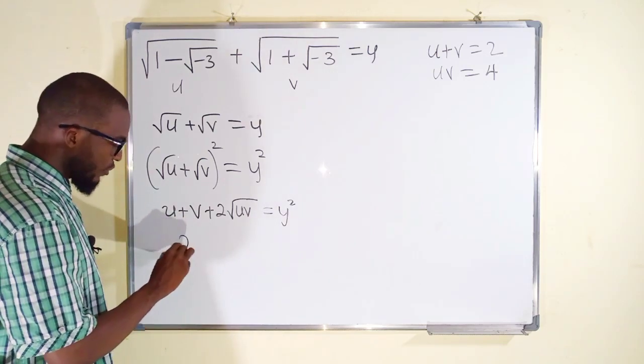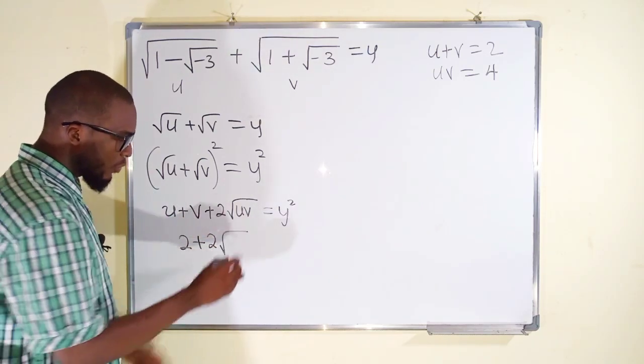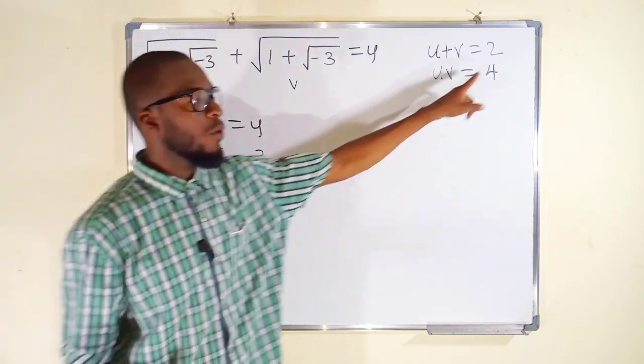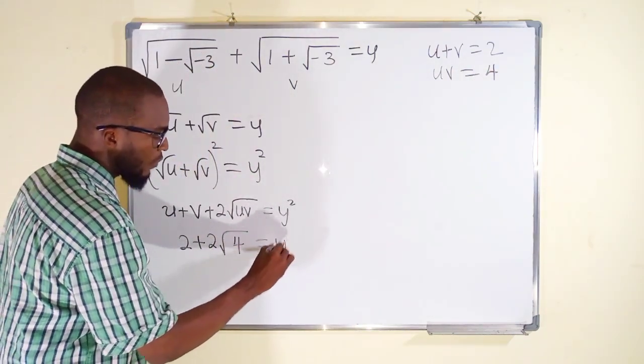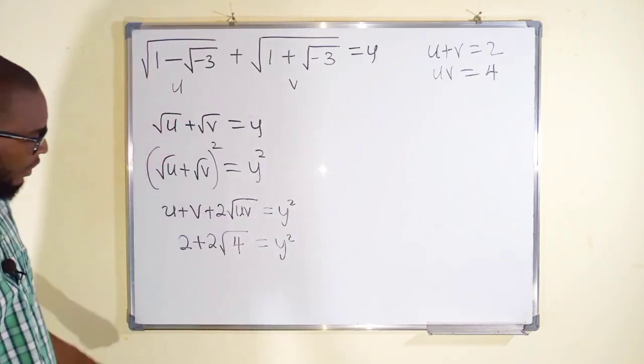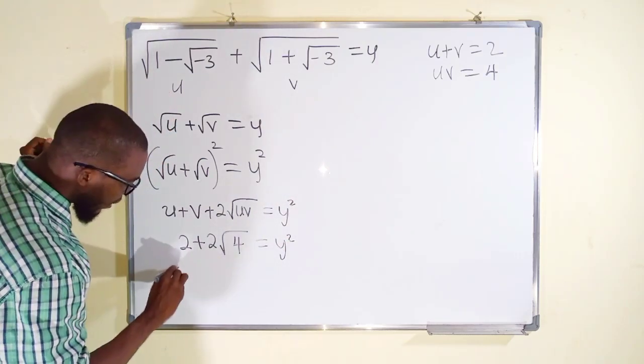So we can replace it by 2 plus 2 multiplied by √(uv). uv is equal to 4, so we have √4 here. And to the right we have y². You know that √4 is 2.